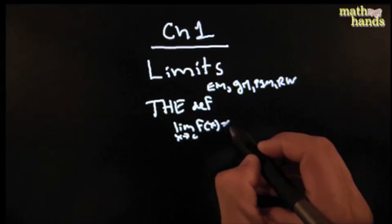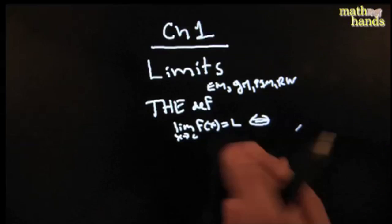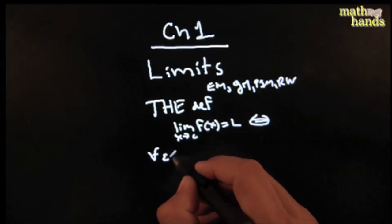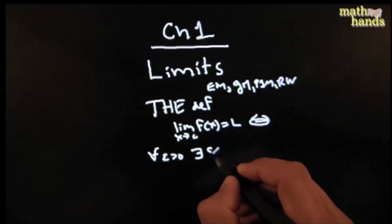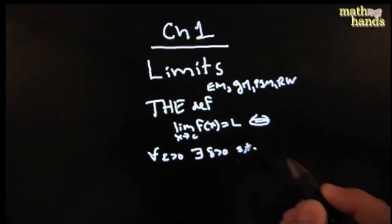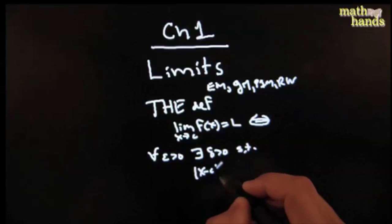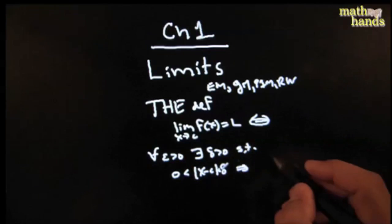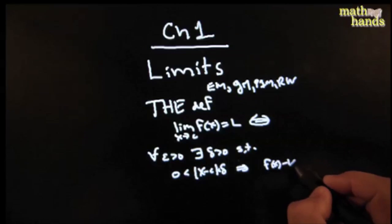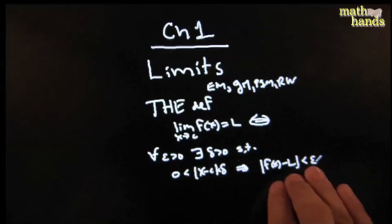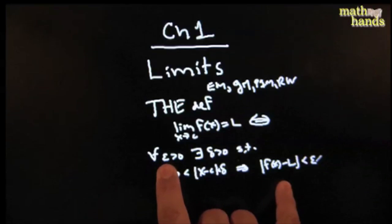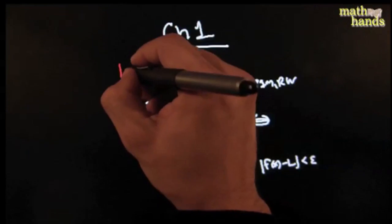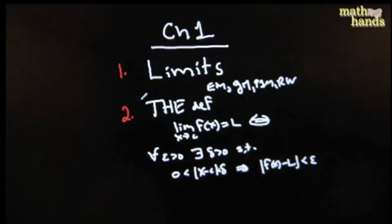The definition of limits says that the limit as x goes to c of f(x) equals L if and only if — and you should know this by heart — for every epsilon greater than zero, there exists a delta greater than zero such that if x is really close to c but not equal to it, that necessarily implies f(x) will be really close to the limit within epsilon.